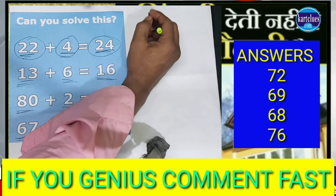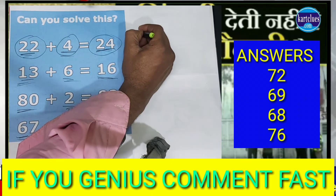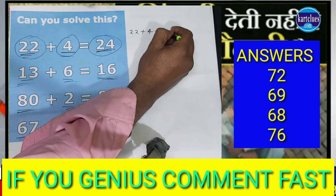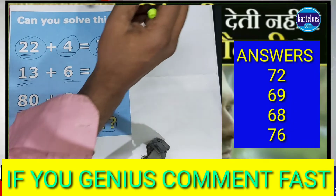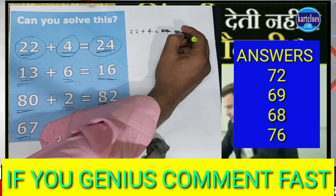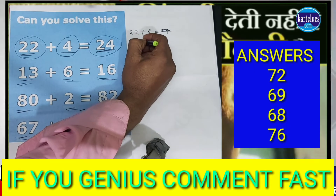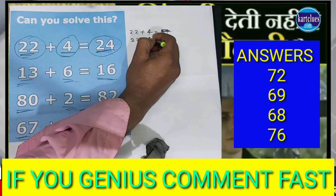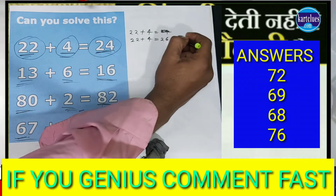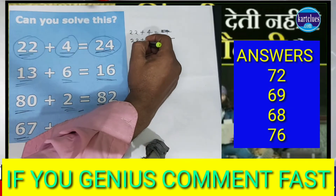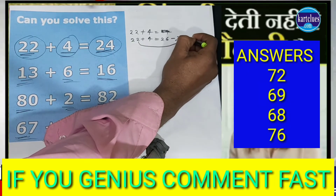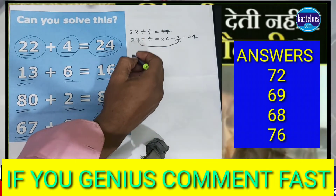See: 22 plus 4 is 26, okay? And minus 2 — this 2 is going here into minus — minus 2 gives us 24. Let's apply the same equation.